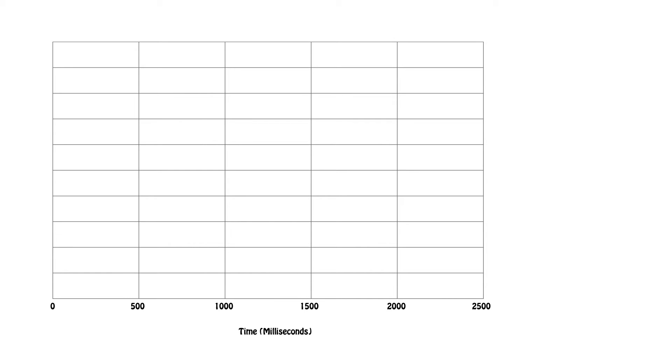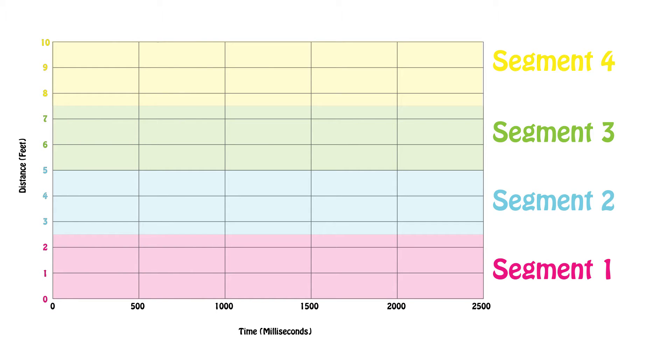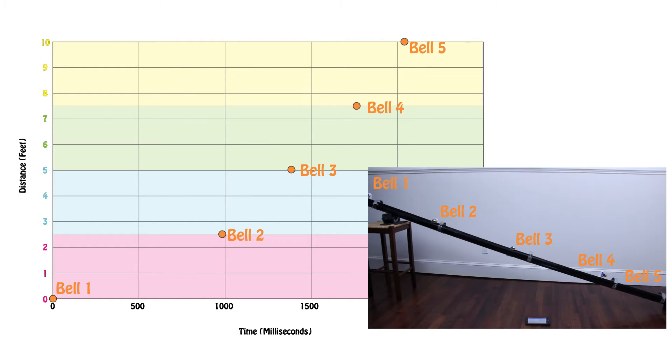On the bottom of the graph, we marked out our x-axis. This is the time, which is our independent variable. On the y-axis, we marked out our dependent variable, which is the distance location for each of the bells. Each of the data points represents a different bell ringing.